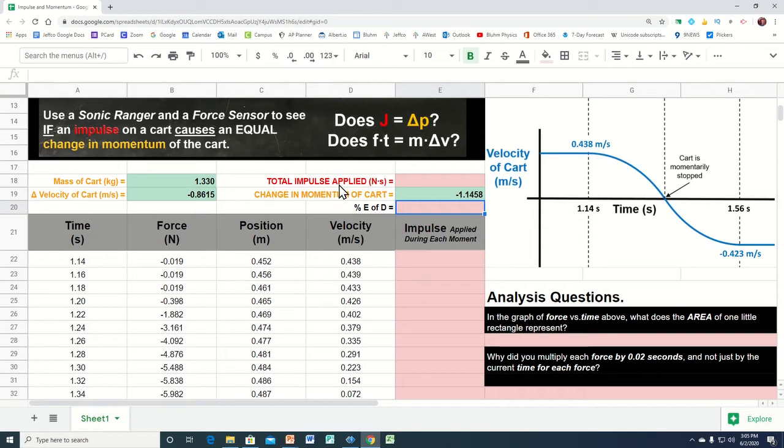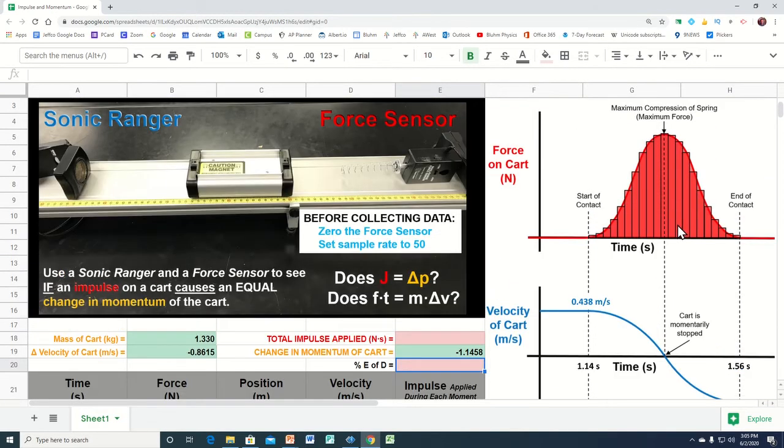Now let's calculate the total impulse that was applied to this. It's kind of a calculus idea, but we're going to estimate the area under this force-time curve. Because every one of these little rectangles is 50 one-hundredths of a second wide. So there was this much time that this much force was applied. This next one had the 50th of a second and it had a little bit more force and a 50th of a second for a little bit more force.